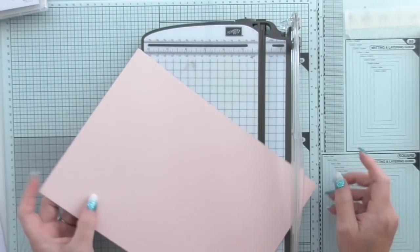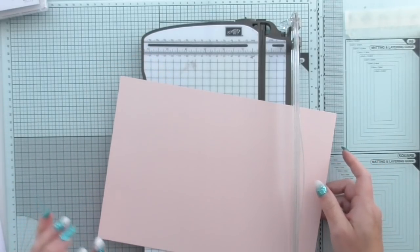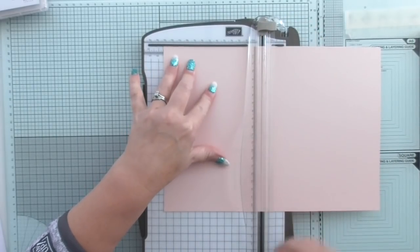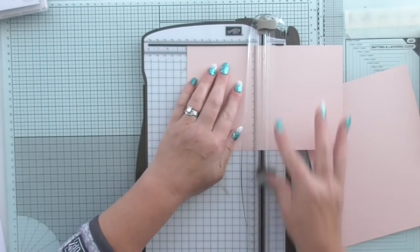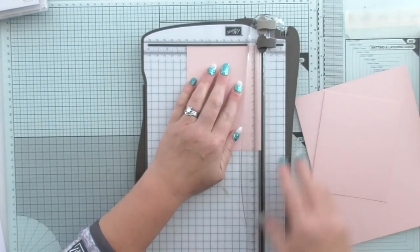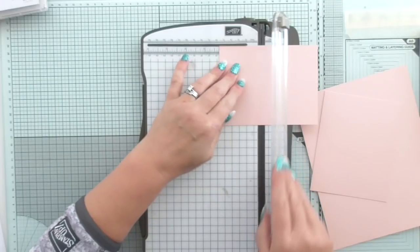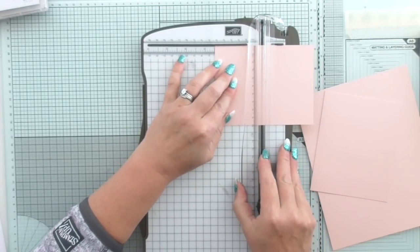Okay, so you need to start with a sheet of cardstock which measures five and a quarter by four, and then we're going to measure it, score it at two and a quarter and two and a half.